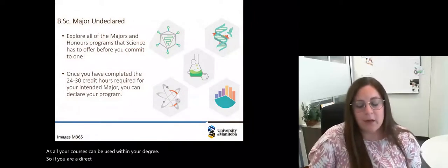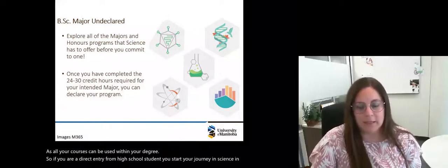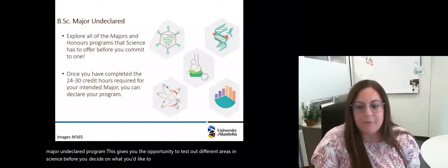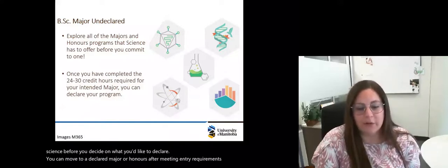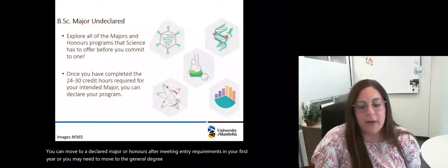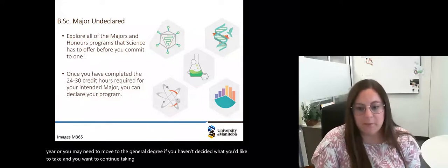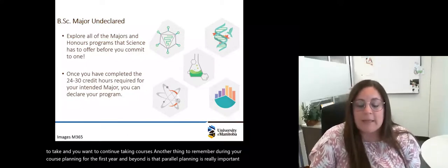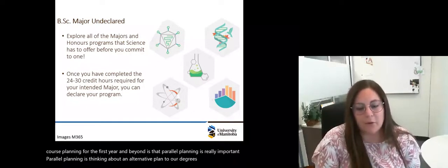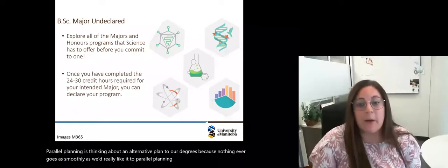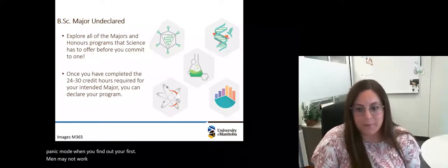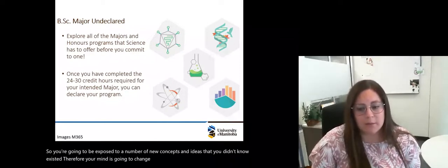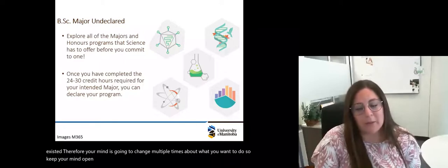If you're a direct entry from high school student, you start your journey in science in the major undeclared program. This gives you the opportunity to test out different areas in science before you decide on what you'd like to declare. You can move to a declared major or honors after meeting entry requirements in your first year, or you may need to move to the general degree. Another thing to remember is that parallel planning is really important. Parallel planning is thinking about an alternative plan to our degrees. Because nothing ever goes as smoothly as we'd really like it to, parallel planning can help keep you out of that panic mode. You're going to be exposed to a number of new concepts and ideas that you didn't know existed. Therefore your mind is going to change multiple times about what you want to do.